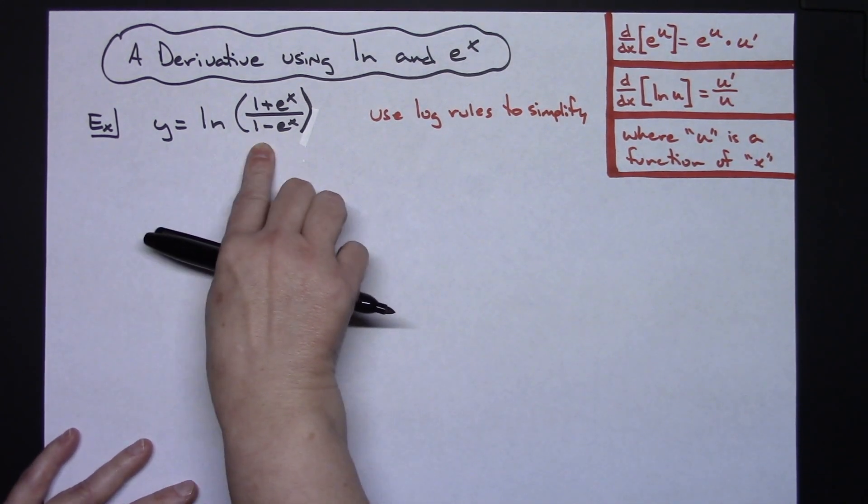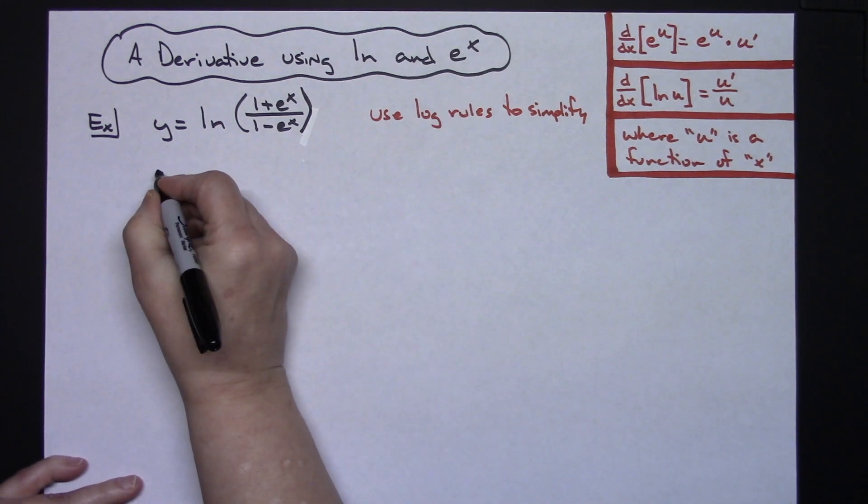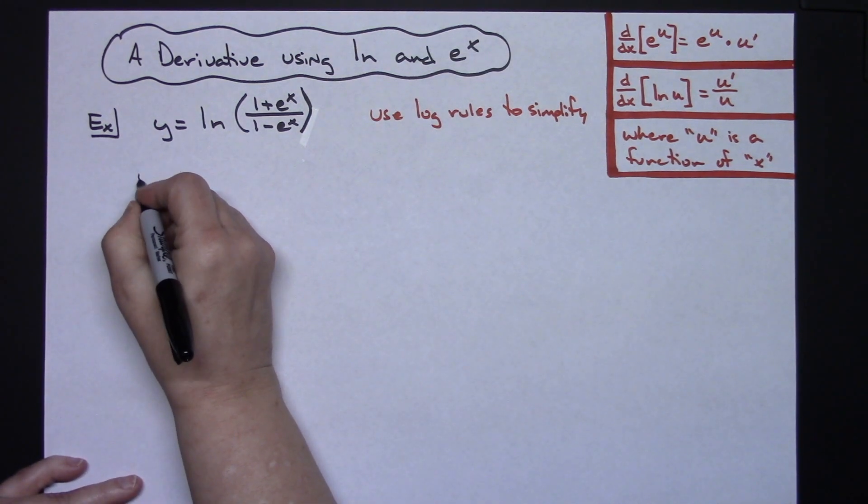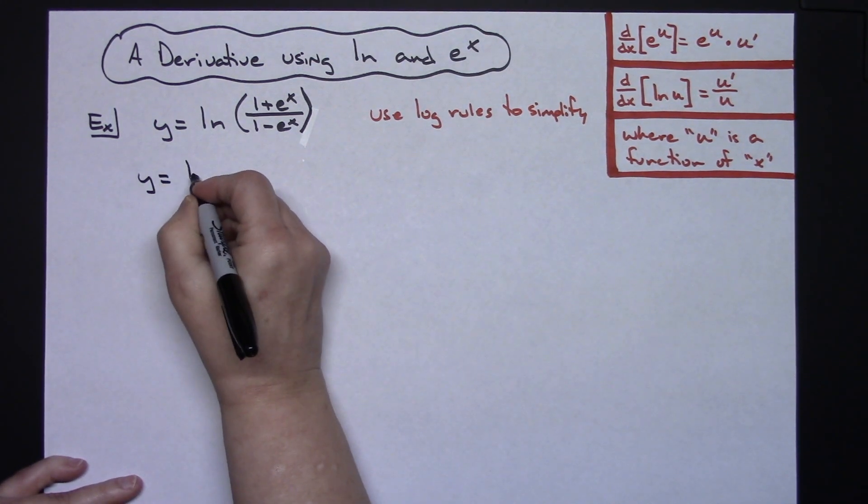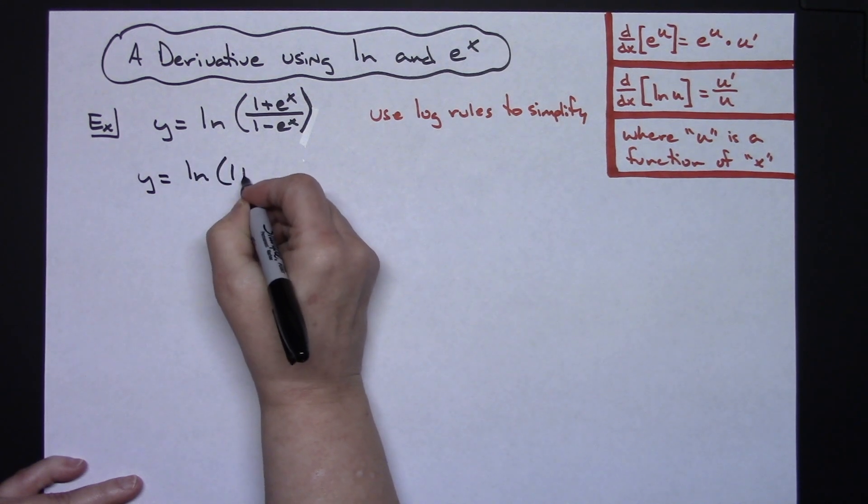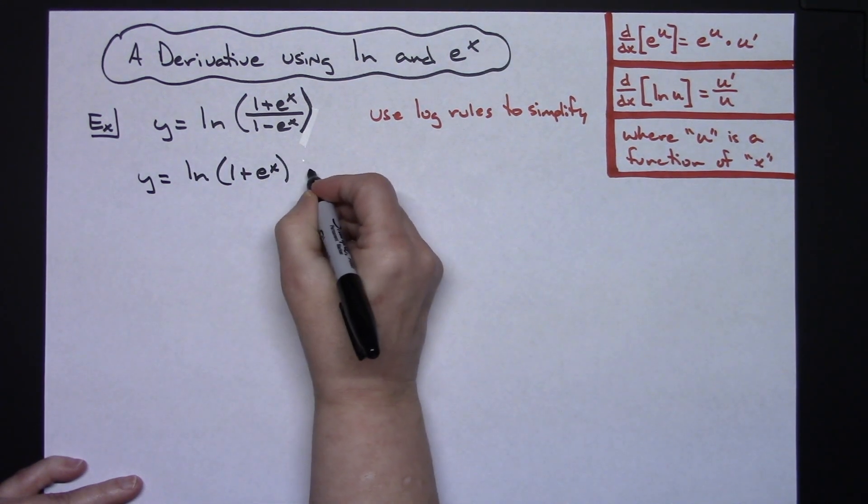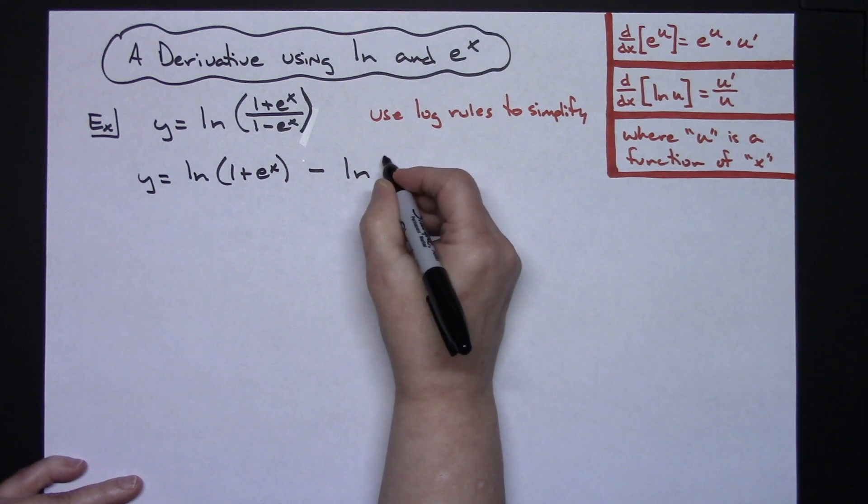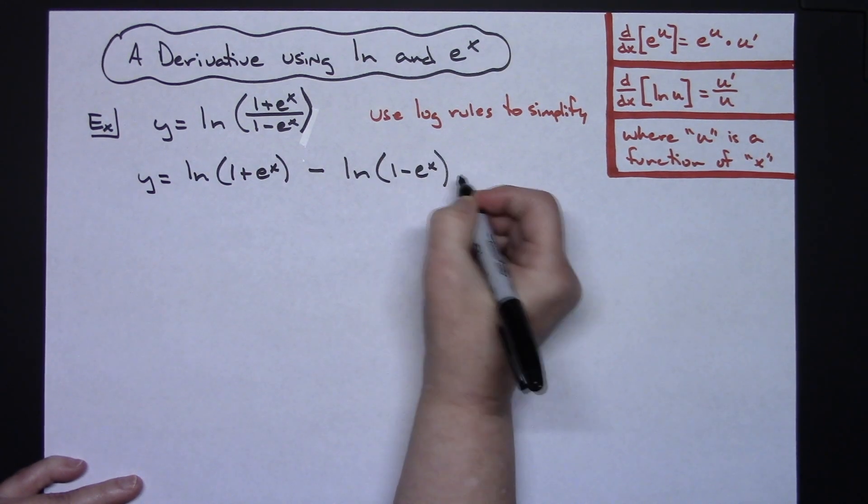Dividing with my logs here I can break this up into subtraction. So I'm going to have y equals the natural log of 1 plus e to the x minus natural log of 1 minus e to the x.